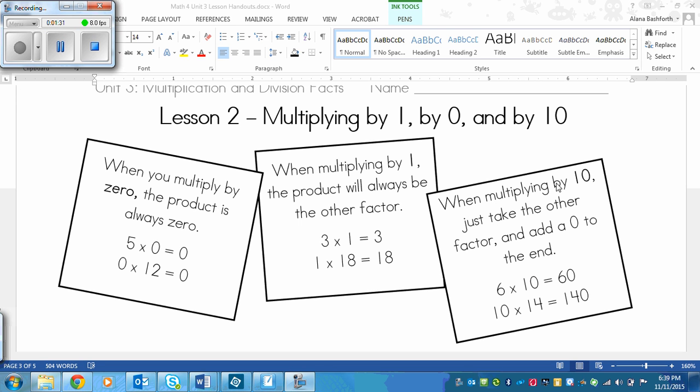Then over here, we've got multiplying by 10. Multiplying by 10 is a lot like multiplying by 1, only instead of just taking the other number, you take the other number, or factor, and add a 0 to the end. So for example, if I have 6 times 10, then this is the other number, 6, and I just put a 0 right after it to make it 60. And then I have 10 times 14, so I take the other number that is 14, put a 0 after it, and it equals 140.